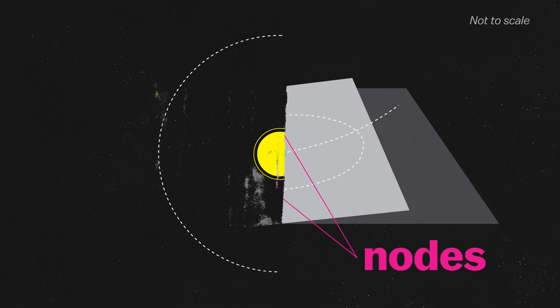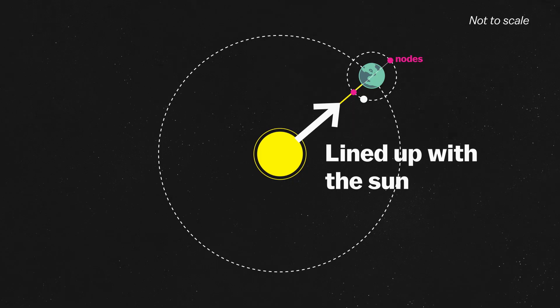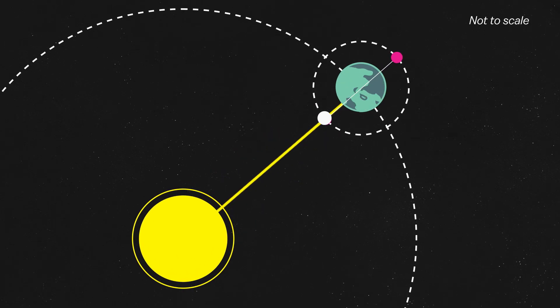And as the Earth moves along its annual orbit, those points line up with the sun about twice a year. As the moon passes between the sun and Earth at that time, we get a solar eclipse. And when it's behind Earth at that time, we get a lunar eclipse.